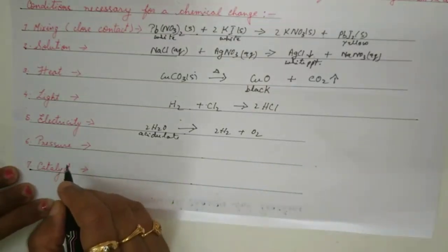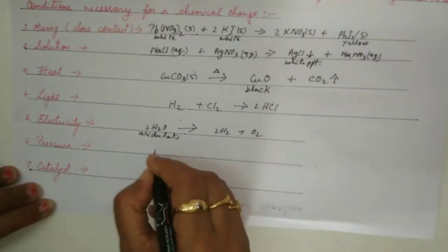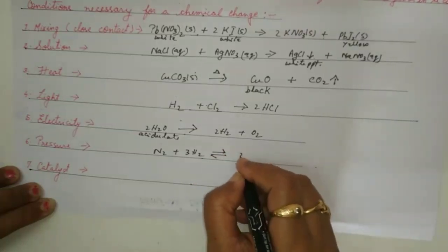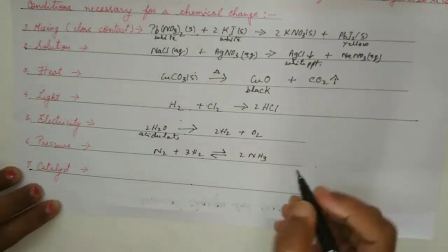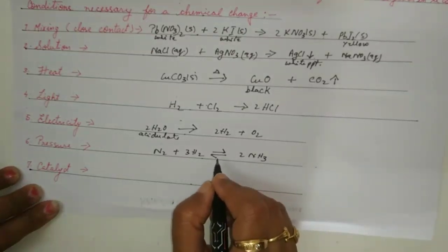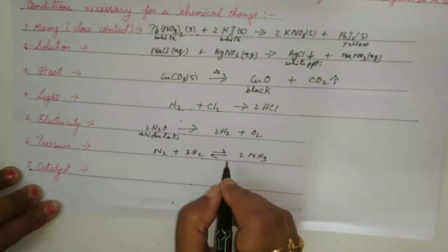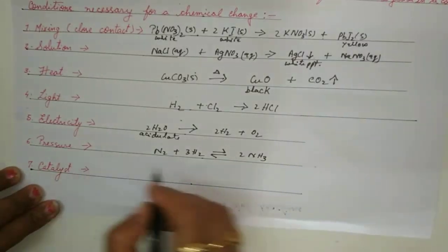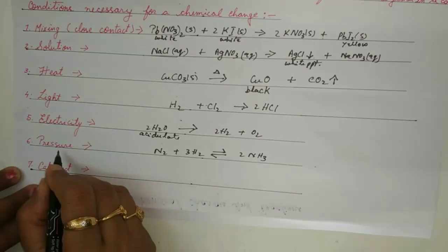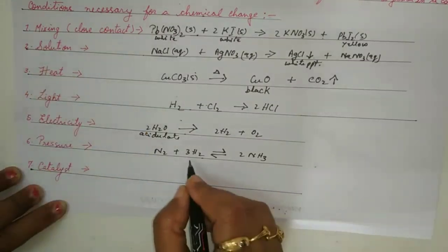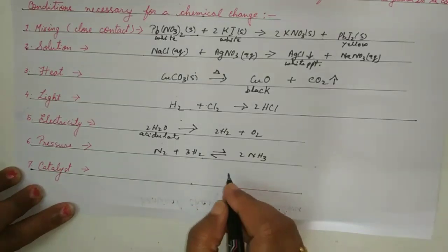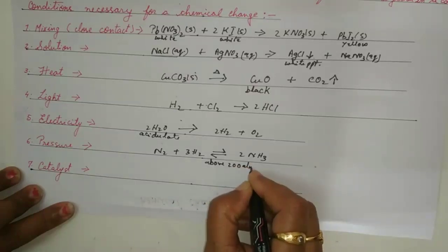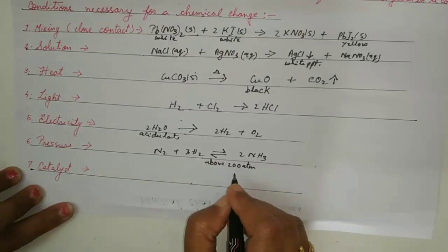The sixth condition is pressure. A very common reaction: nitrogen and hydrogen undergo a reversible reaction to give ammonia. This is the Haber process, where the reaction takes place in the presence of iron as a catalyst and molybdenum as a promoter, under certain temperature and pressure. The pressure required for this reaction should be above 200 atmospheres, so you have to mention how much it is.